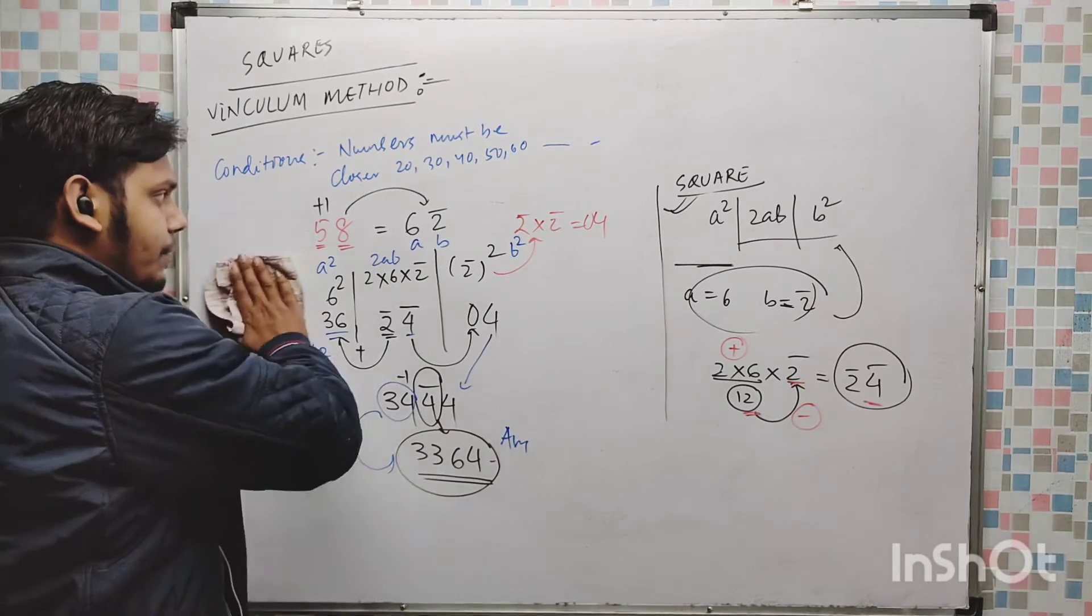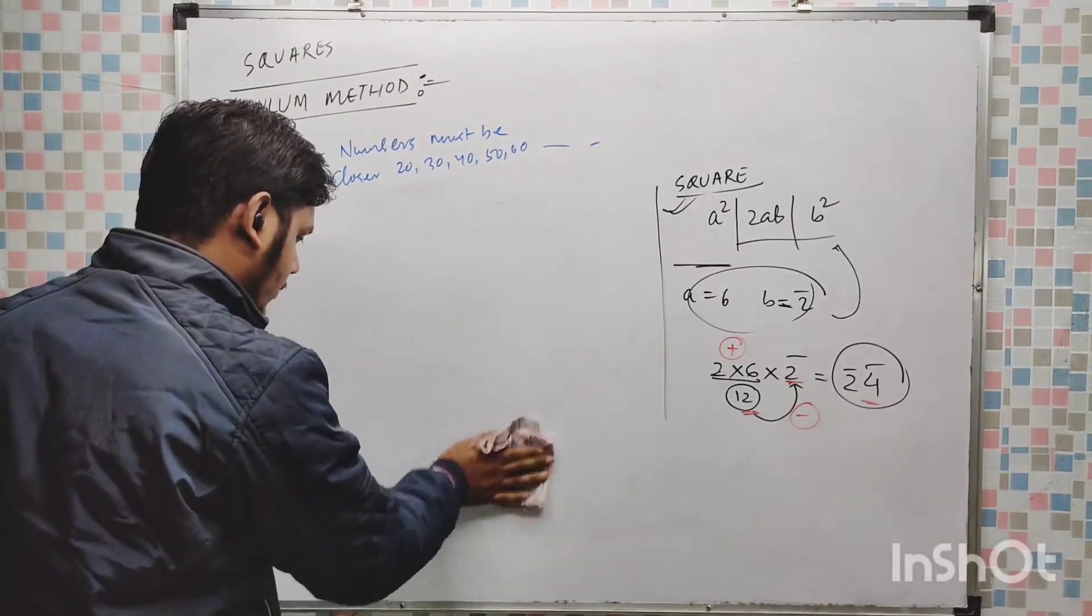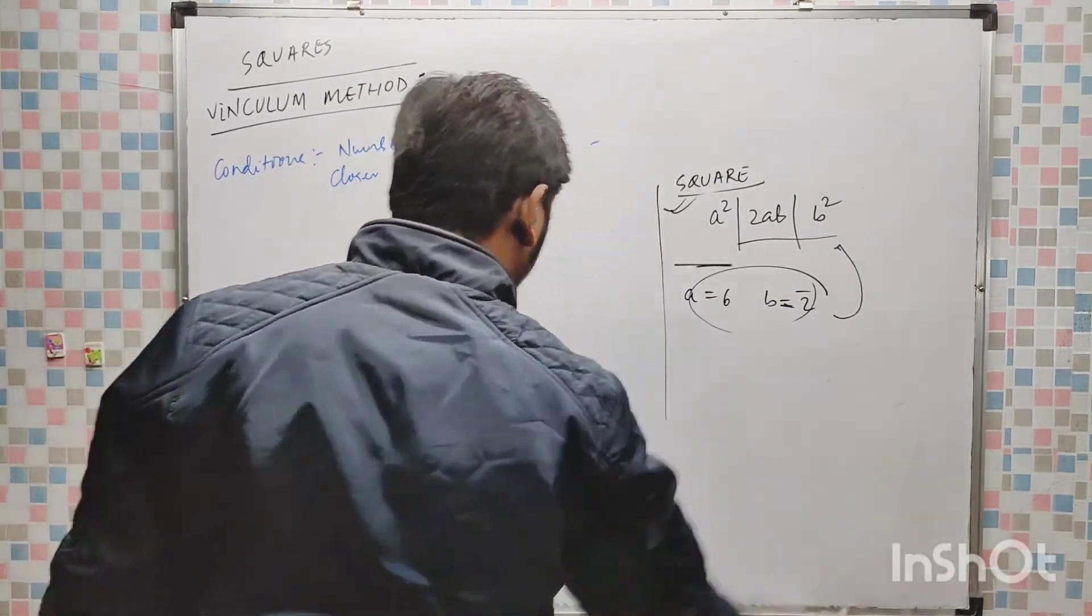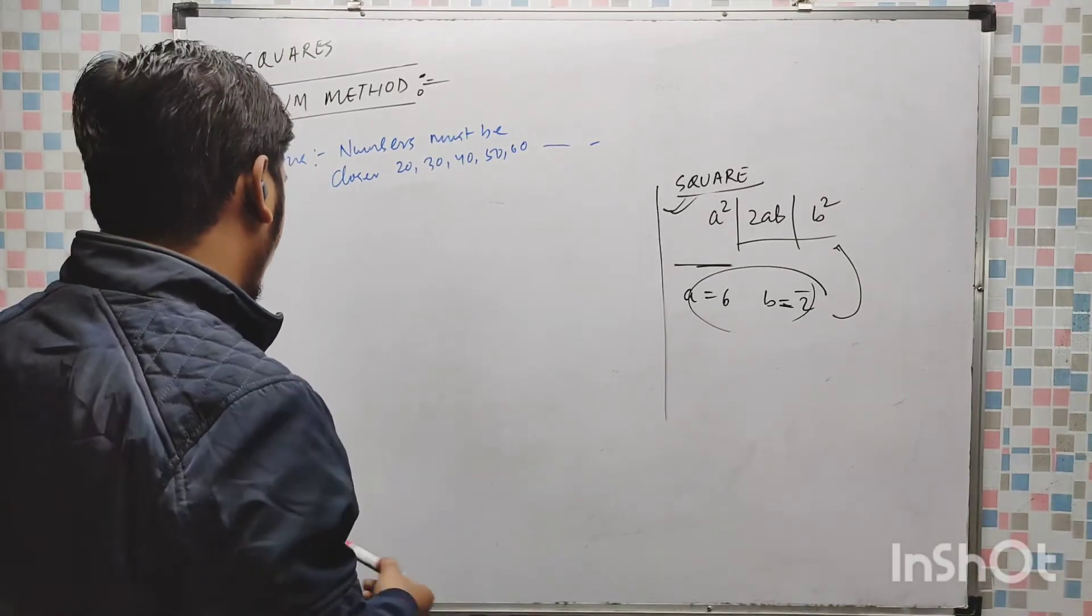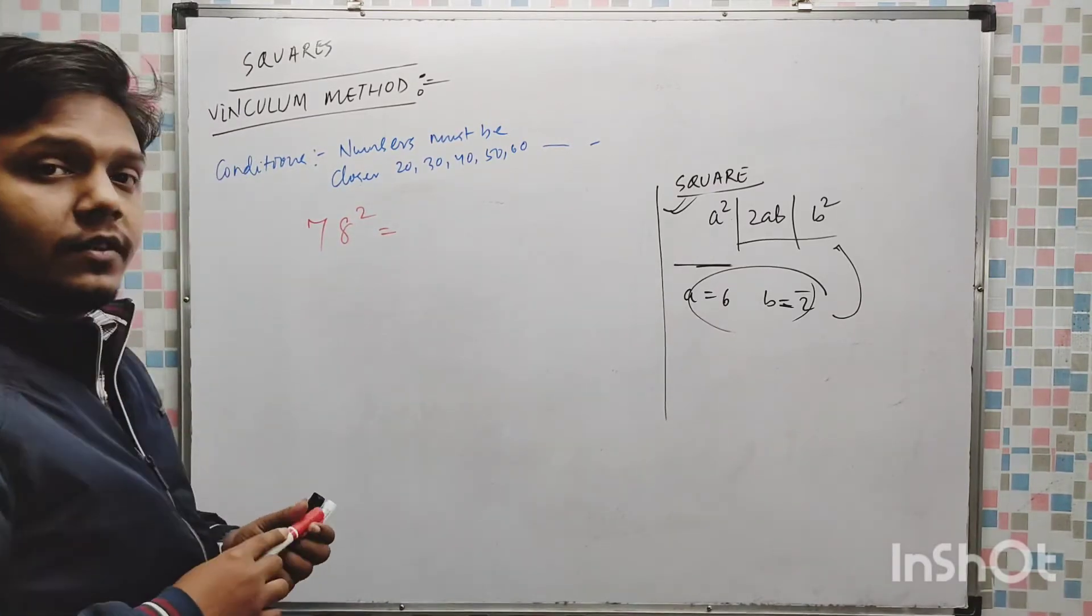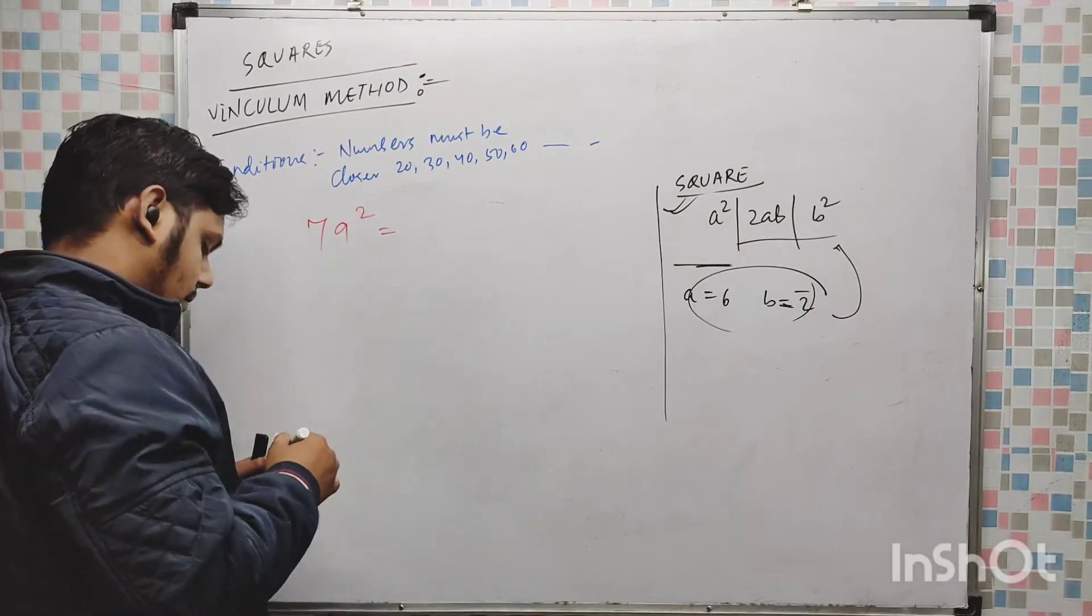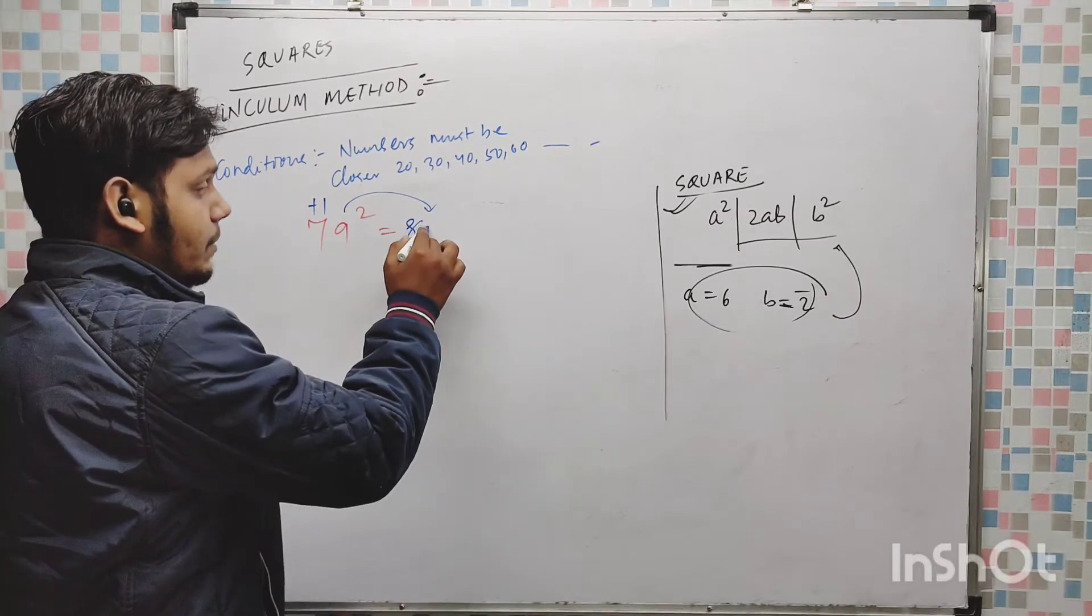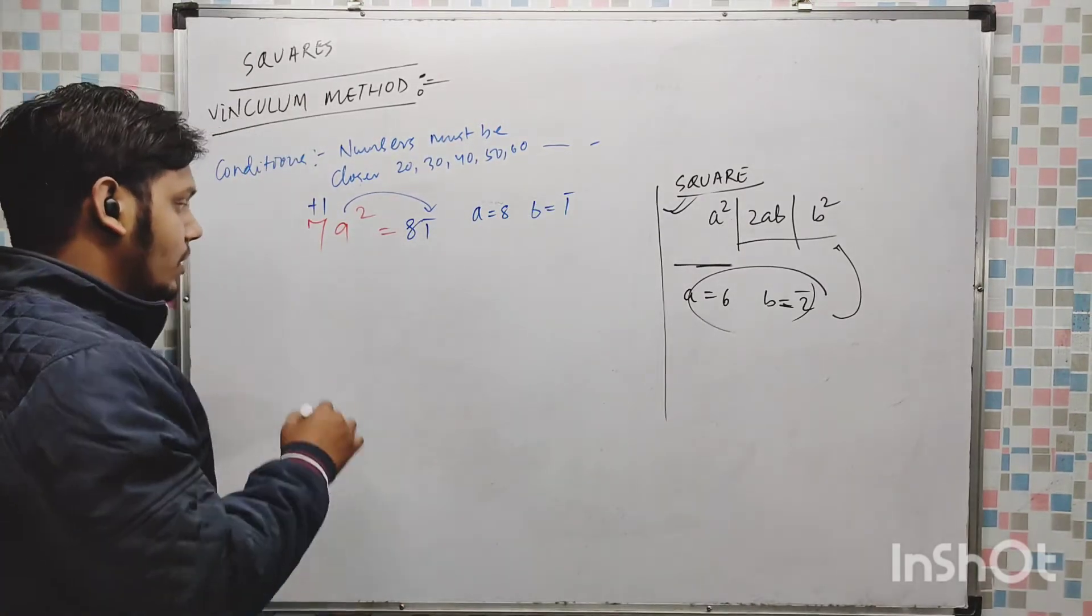Let's say 79 square you are going to find. Now what we have to do, this number we will increase by 1, 8, 9 complement 1 bar. Now your A is 8, B is 1 bar. Now put the formula A square.